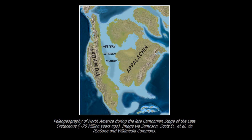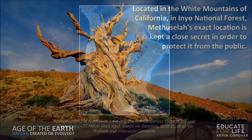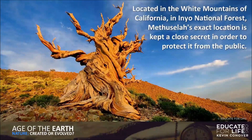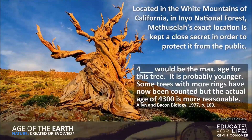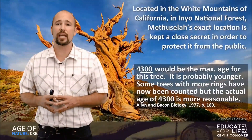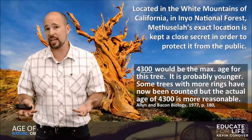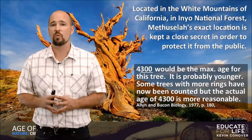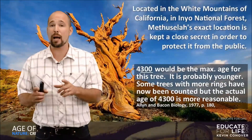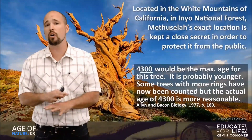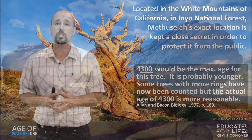This tree is named Methuselah, after the man of the Bible who lived longer than any other person. Its exact location is kept a close secret to protect it from the public — it's located in the White Mountains of California in Inyo National Forest. 4,300 years old would be the maximum age for this tree. Why are there no trees that can be accurately dated older than 4,400 years? I'd like to guess it's no coincidence that the Bible records there was a flood 4,400 years ago — all the trees and life were wiped out, making this the oldest tree in the world.